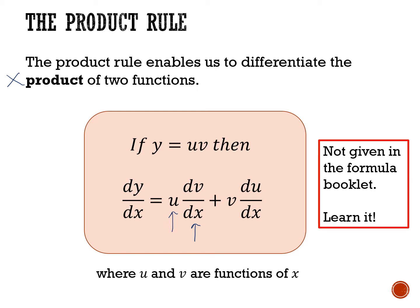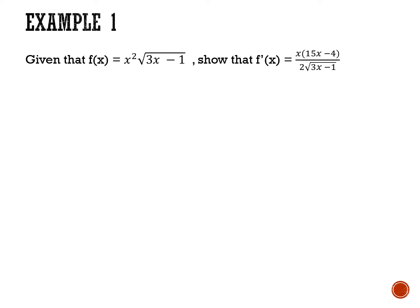I'm going to show you some good working to write down to make sure you don't make mistakes. When you've done more of these you may be able to do more in your head, but to start with show your working: write down what u is, what v is, and their differentials, then plug them into the formula. Here's example number one — write that down.